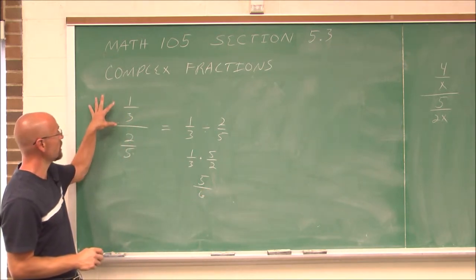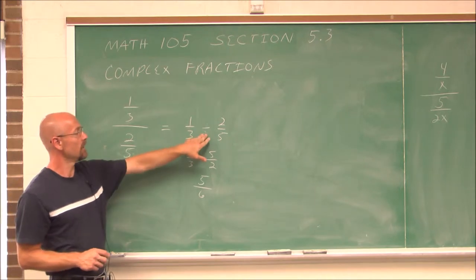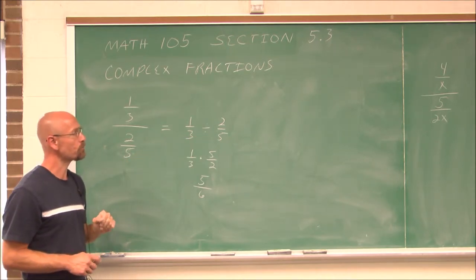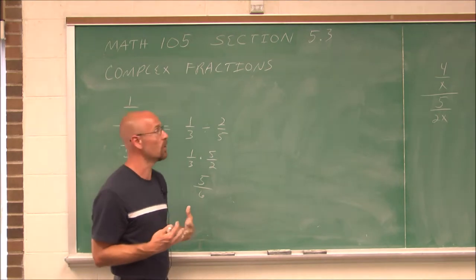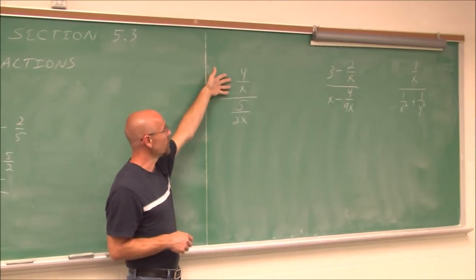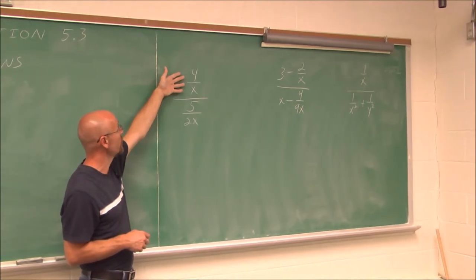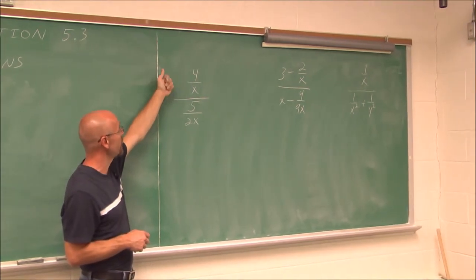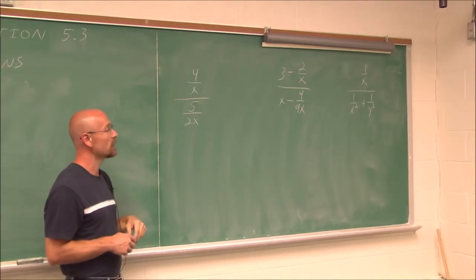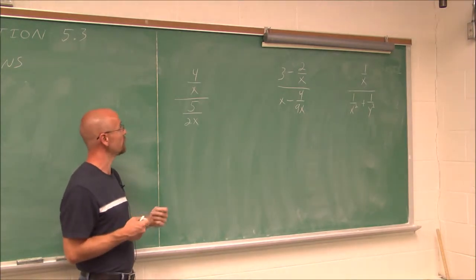So a complex fraction is just a multi-storied fraction — it's just a different way of writing this expression. Now, when we deal with polynomials and rational expressions, we might have something that looks like this: 4 divided by x, divided by 5 divided by 2x. Now, there are two methods of solving these.